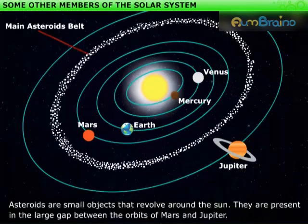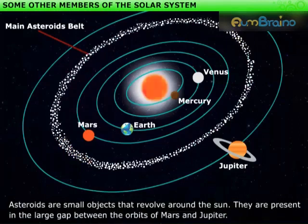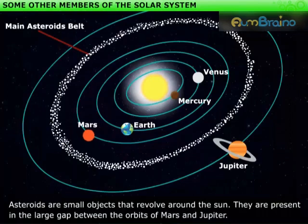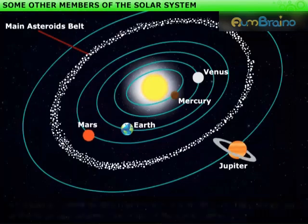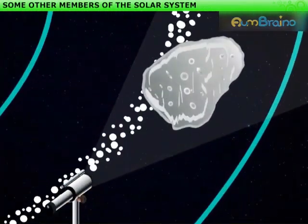Asteroids are small objects that revolve around the sun. They are present in the large gap between the orbits of Mars and Jupiter. They can only be seen through large telescopes.